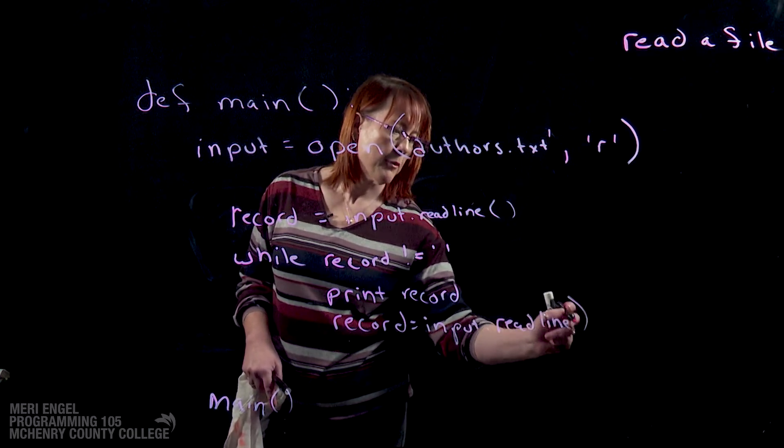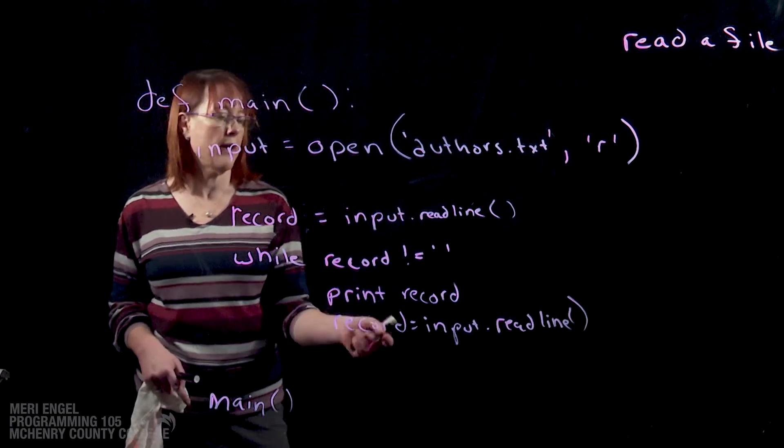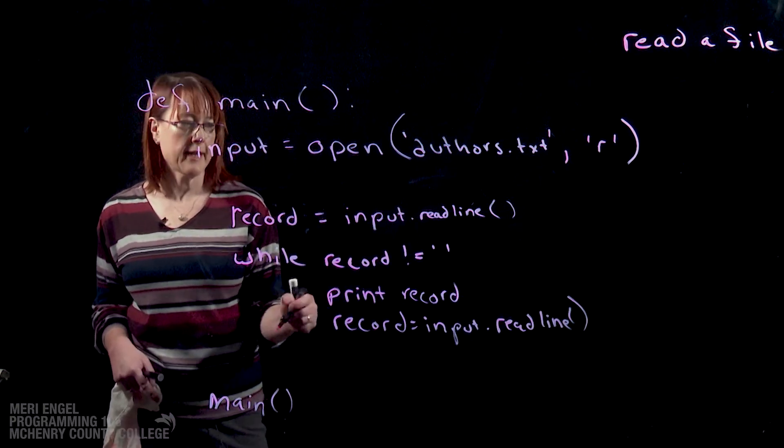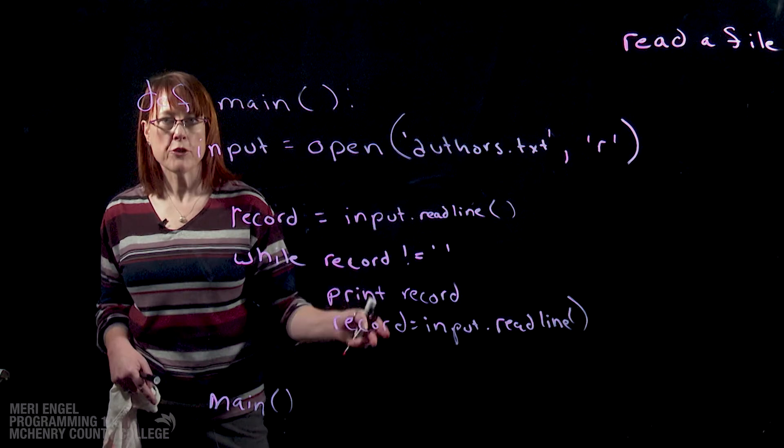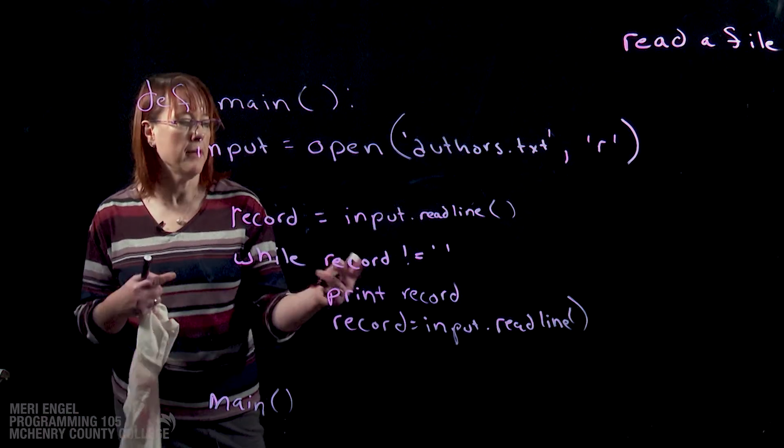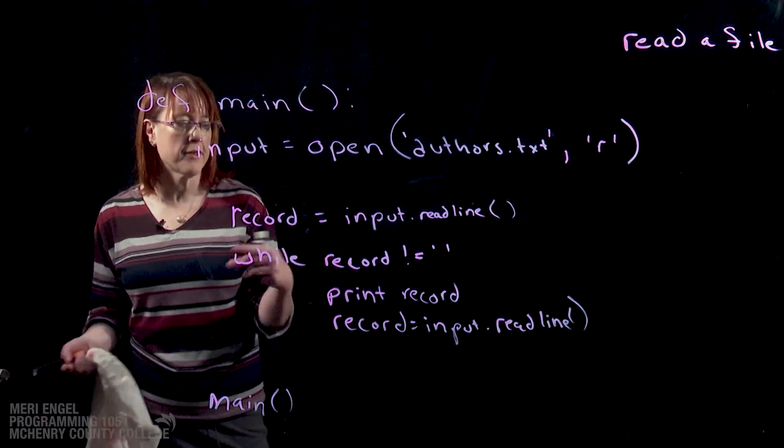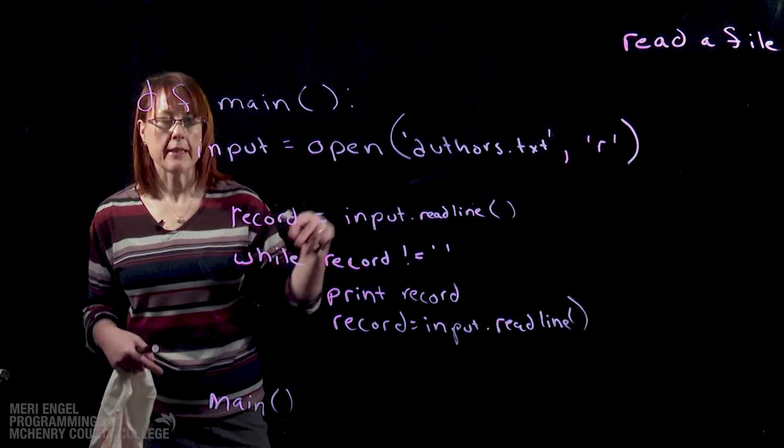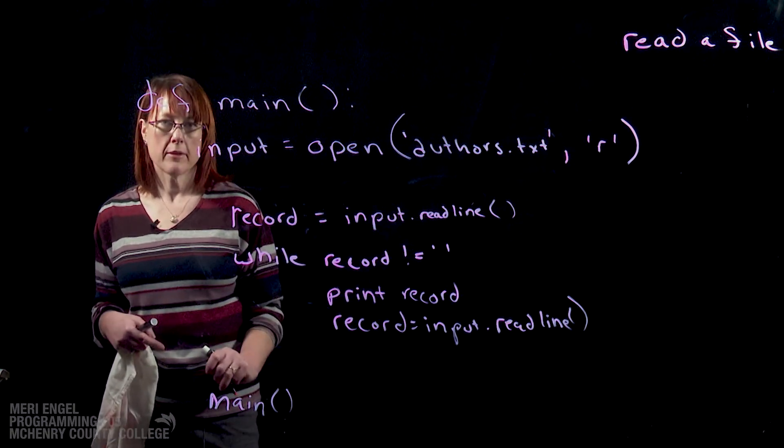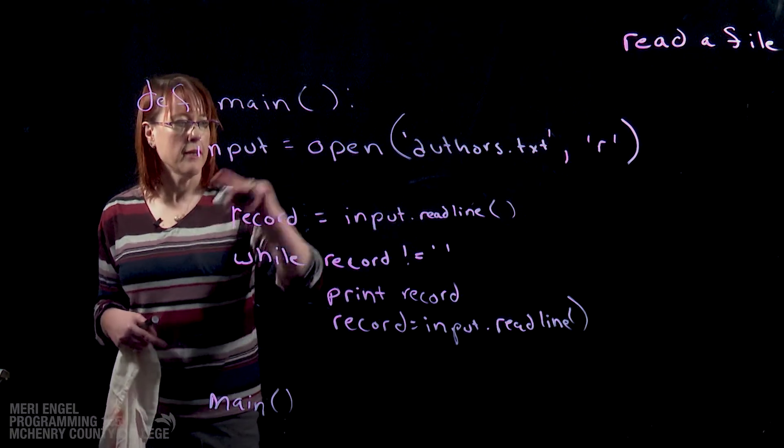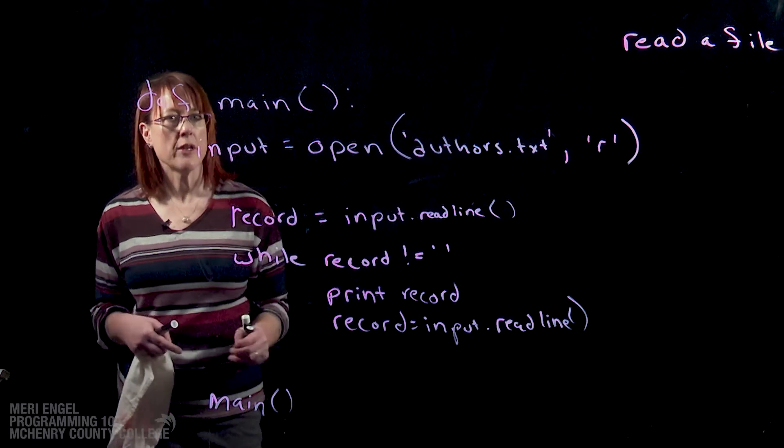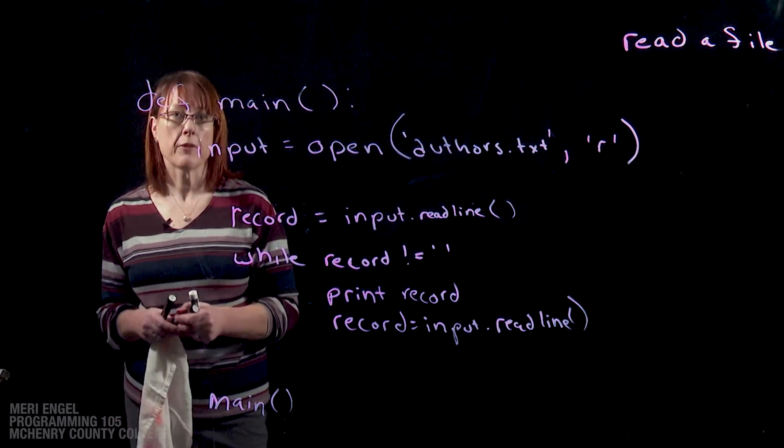And this is the most common way you're going to work with files, is where you're reading in one at a time, doing stuff with each record, possibly saving them, making changes to them, converting them to an int, taking the newline escape sequence off the end. But this is the process we will generally use with working with file input.